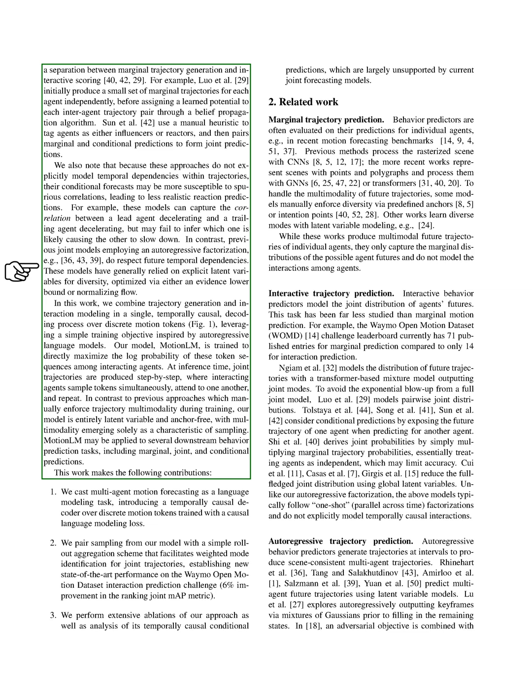This model is trained to maximize the log probability of these token sequences among interacting agents. At inference time, joint trajectories are produced step-by-step, where interacting agents sample tokens simultaneously, attend to one another, and repeat. Unlike previous models that manually enforce trajectory multimodality during training, our model is entirely latent variable and anchor-free, with multimodality emerging solely as a characteristic of sampling.